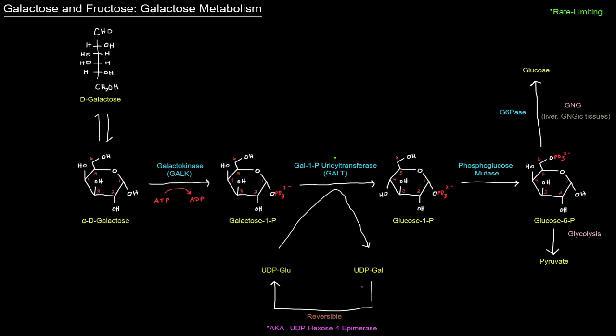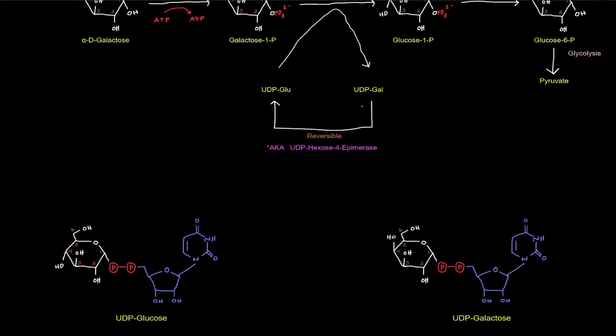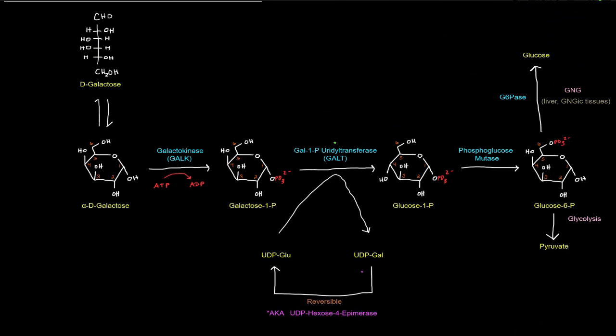Just so you have a better visual, scroll down here real quick. This is what UDP-glucose looks like - it's just the UDP portion here, the colored portion, and this is glucose. Over here it's UDP-galactose - UDP is the same, the galactose there of course is different only at carbon number four. That's just the visual - I couldn't fit it all on the same page so I drew it down there just to show you what each of those actually looks like. That's the reaction there catalyzed by GALT.